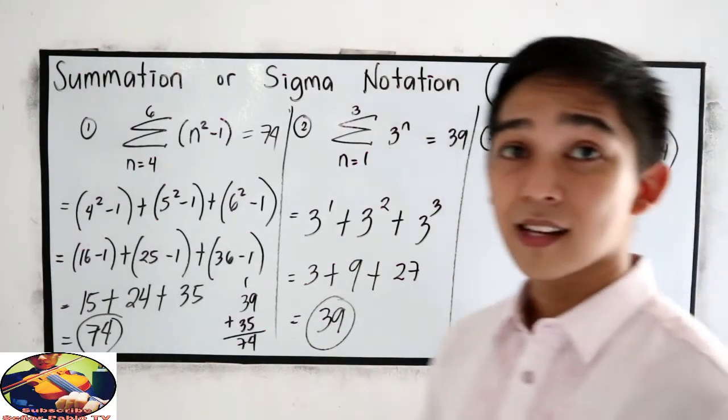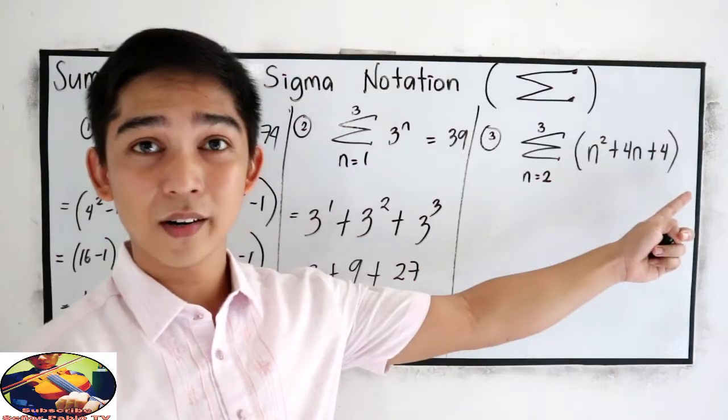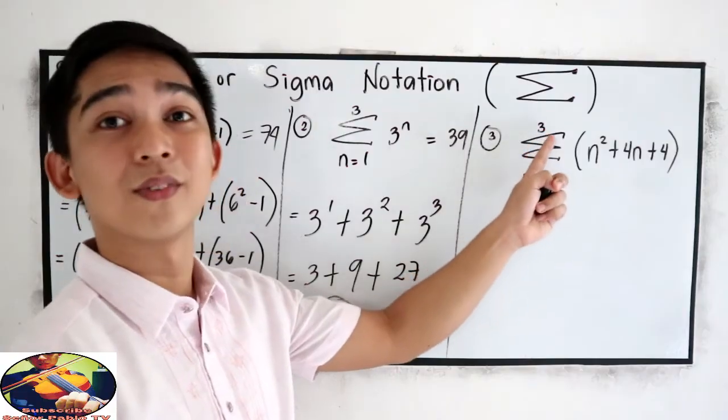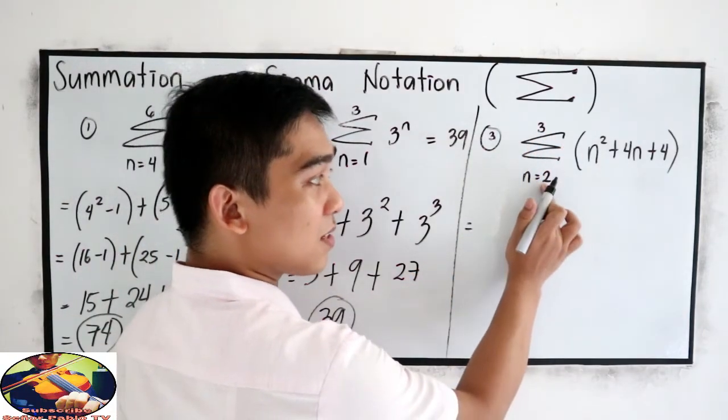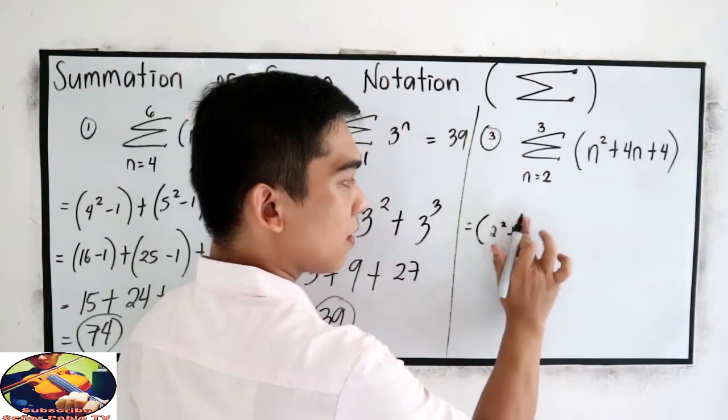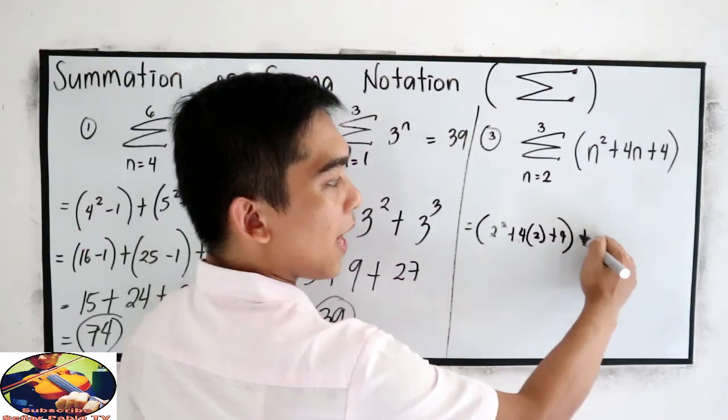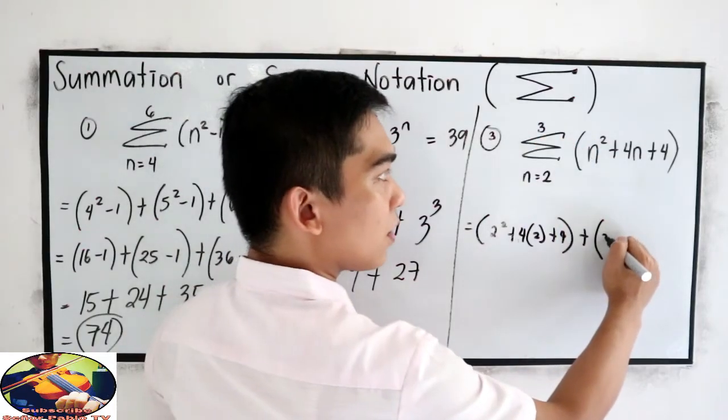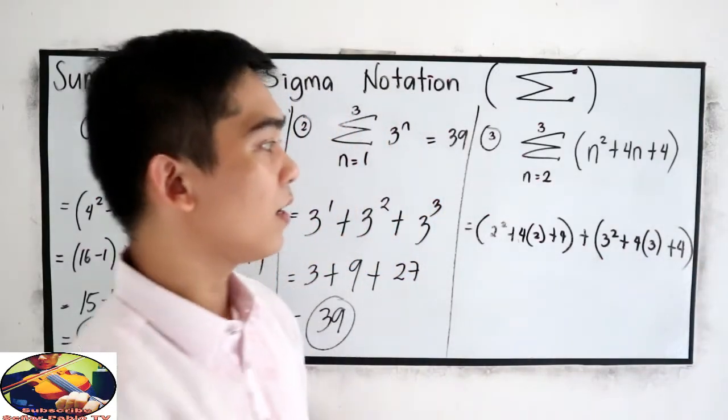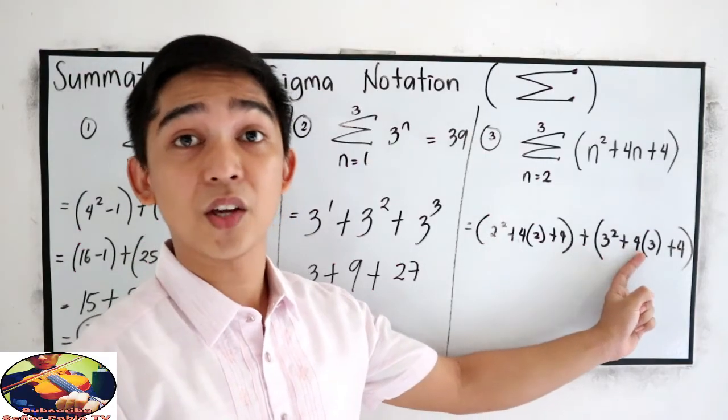And our last example: summation of N squared plus 4N plus 4, goes from 2 to 3. So let's start with 2. That will give us 2 squared plus 4 times 2 plus 4, plus 3 squared plus 4 times 3 plus 4. Just change the N to 2 and 3. Always check your substitution.